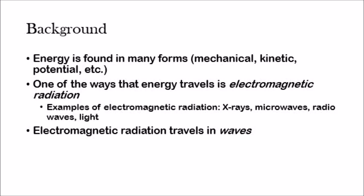Examples of electromagnetic radiation you see on a day-to-day basis are like x-rays — the stuff you use at the doctor to see which bones are broken. Microwaves, stuff you use to heat your food. Radio waves, stuff you use to listen to music. Light is also an example of electromagnetic radiation. And electromagnetic radiation travels in waves.